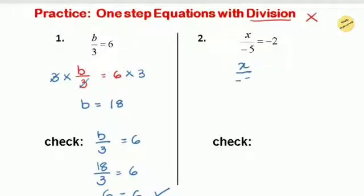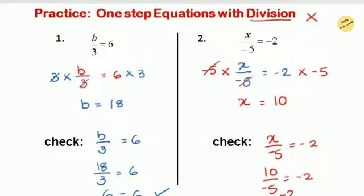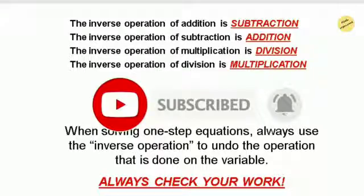In question 2, we multiply both sides by negative 5. On the left, negative 5 cancels with the denominator, and on the right, 5 times 2 equals 10. Since both signs are negative, negative times negative gives positive 10. To verify: write the equation and substitute x with 10 — 10 divided by negative 5 equals negative 2, matching both sides. You need to be very careful when simplifying integers — use the proper sign and always follow the rules of inverse operations while solving one-step equations. Hope you understood this concept. Please like, subscribe, and press the bell button to get notified of our latest videos.